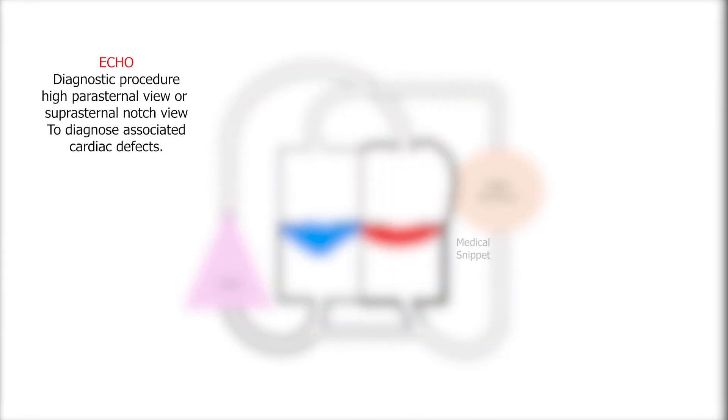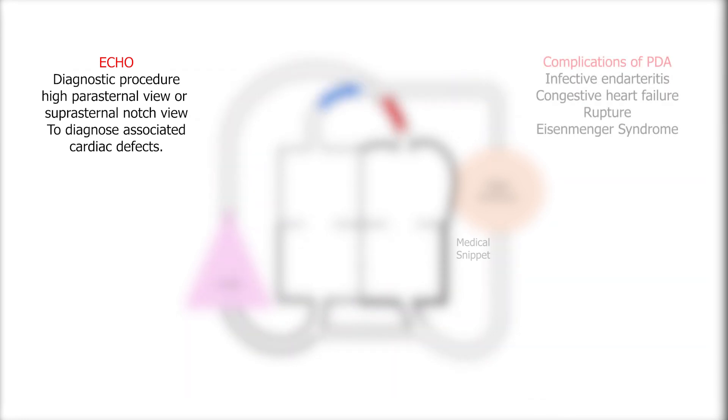Echocardiography is the diagnostic procedure of choice. PDA can be visualized in parasternal view or suprasternal view. If PDA is left untreated, complications can occur: infective endarteritis, congestive heart failure, rupture of PDA, and development of Eisenmenger syndrome. In Eisenmenger syndrome, there is differential cyanosis. To prevent these complications, PDA must be managed accordingly.